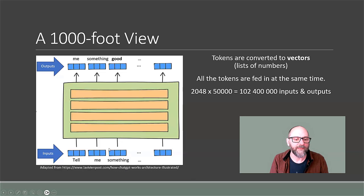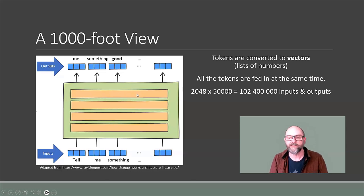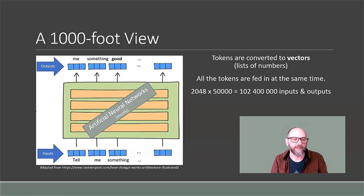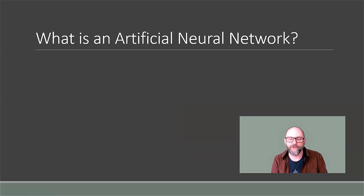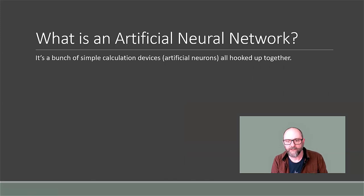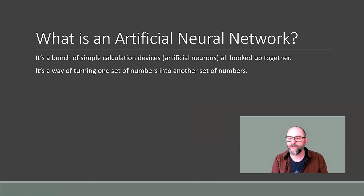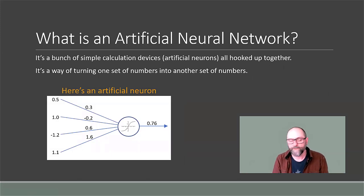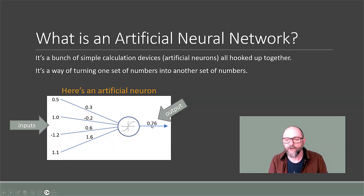So predicting the next word — tell me something — it's predicting that the next word should be 'good.' If you want to keep predicting, give it 'tell me something good' and see what it predicts next, and so on. In between is a bunch of artificial neural networks doing processing and transformations. An artificial neural network is a bunch of simple calculation devices called artificial neurons all hooked up together. A neural network takes one set of numbers and transforms it into another set of numbers. A single artificial neuron takes a list of numbers of any size and crunches it down to a single number.